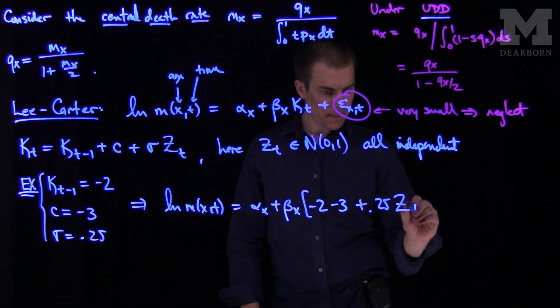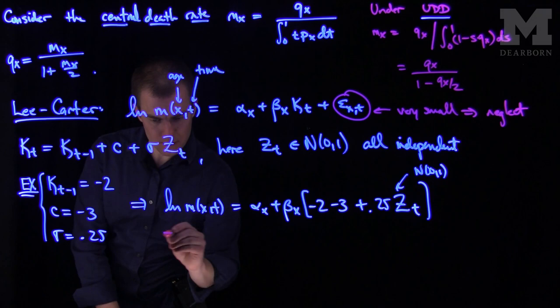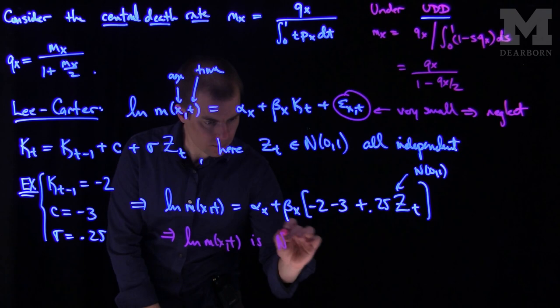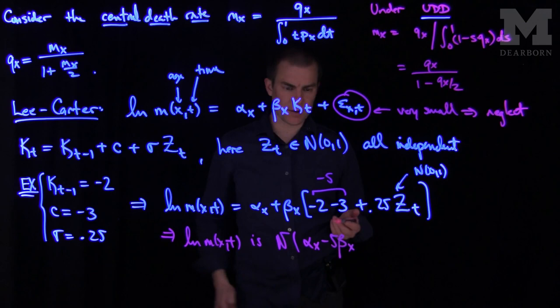And this, of course, again is normal 0,1. And so what does this tell us? This tells us, in particular, that the natural log of m of xt is normal. The mean is going to be alpha x and then this over here is a negative 5, so I'll have negative 5 beta x, and the typical problems will be given to us.